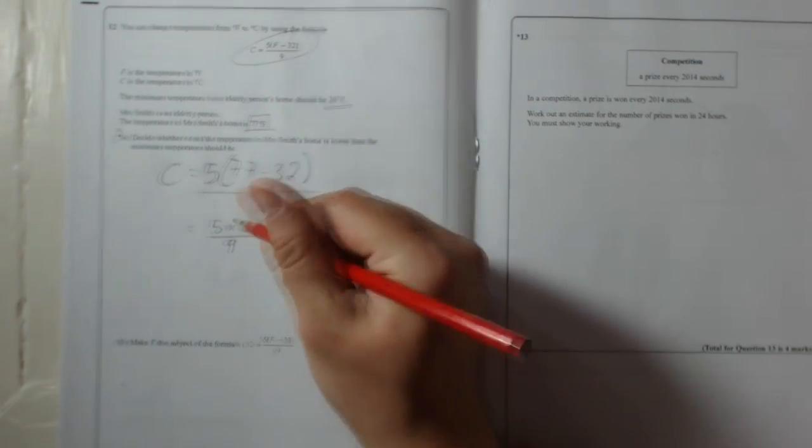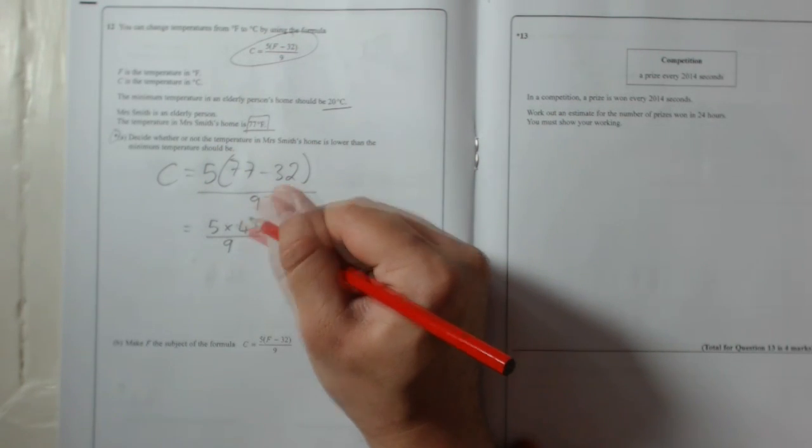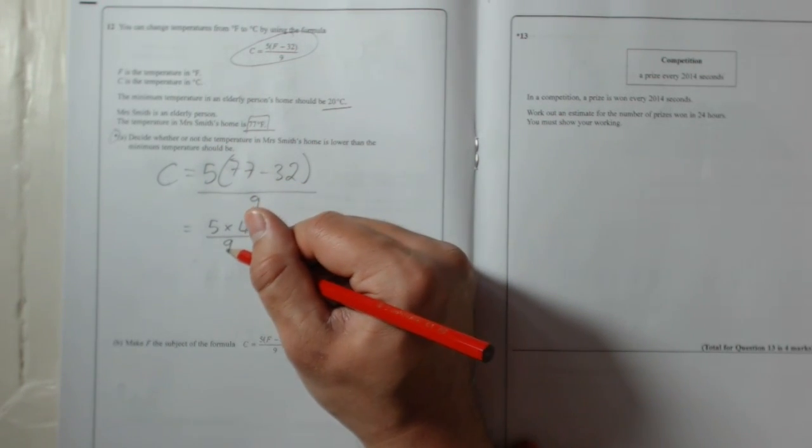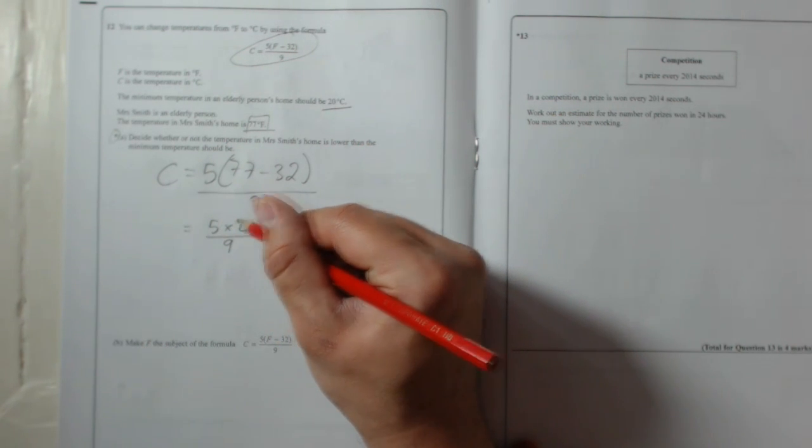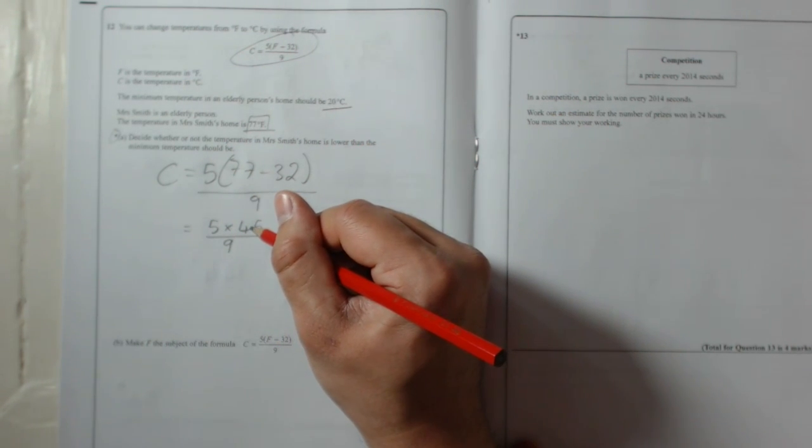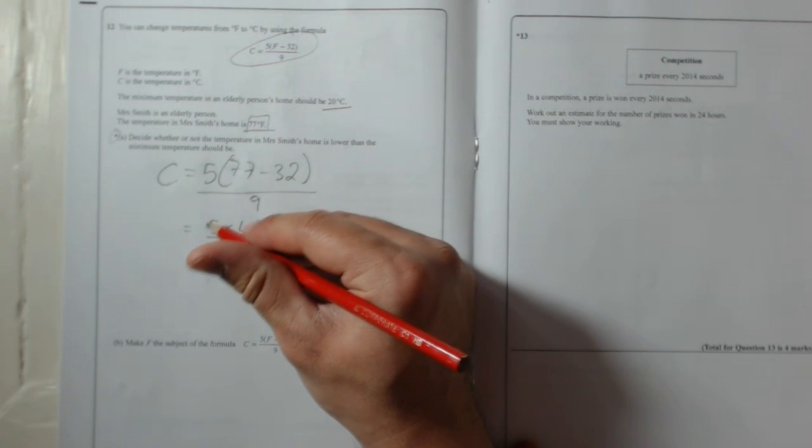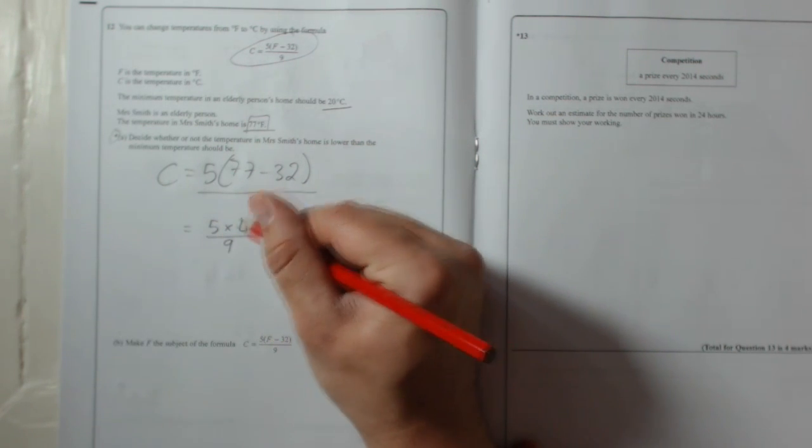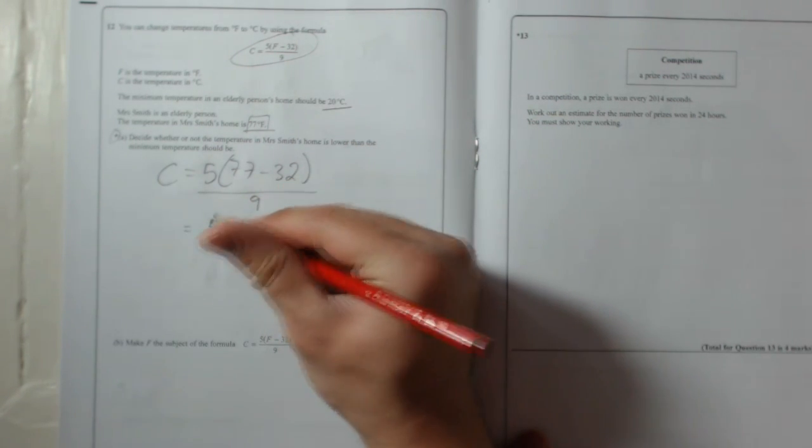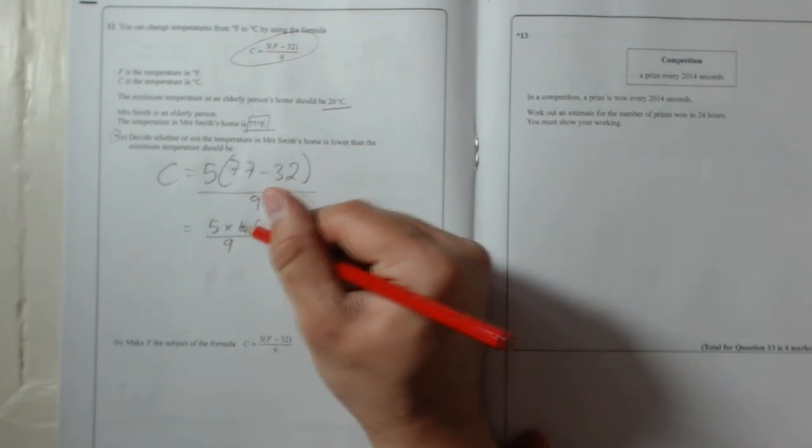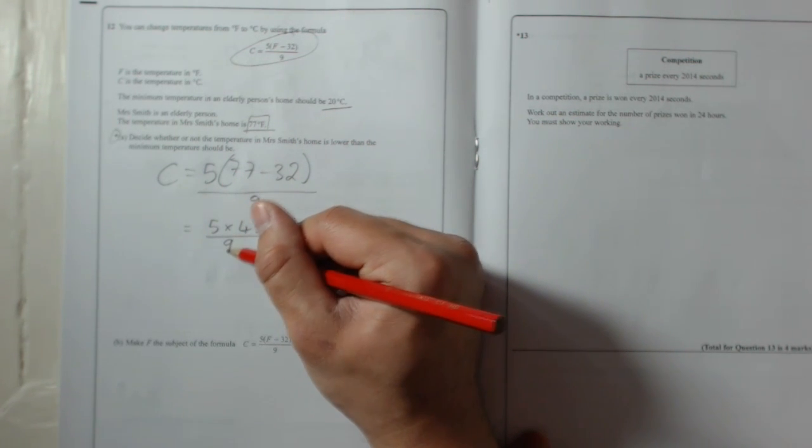So we could work this out now, 5 times 45 and then divide all of that by 9. But what is actually easier to do is when it's 5 times something, what you can do if you're going to end up dividing it by 9, you can just divide one of the numbers by 9 first, which I suggest 45 because it's in the 9 times table, then times it by 5. So 45 divided by 9 is 5.